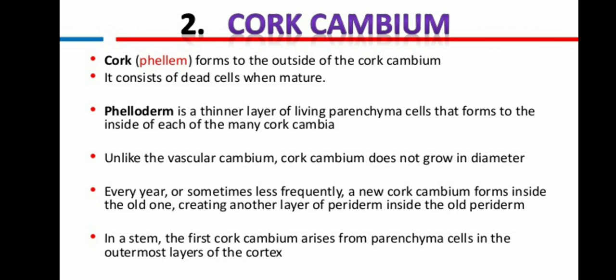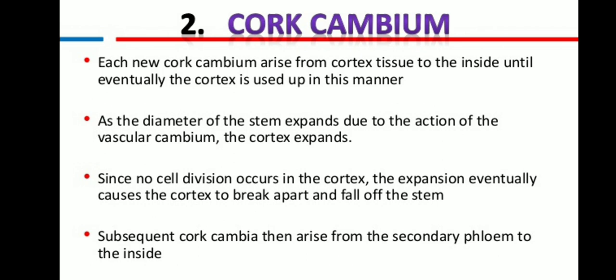The periderm consists of cork, phelloderm, and cork cambium cells. The cork, which is the phellem, forms to the outer side of the cork cambium and consists of dead cells when mature. The phelloderm is a thin layer of living parenchyma cells that forms on the inside of the cork cambium. Unlike the vascular cambium, the cork cambium does not grow in diameter. Every year, or sometimes less frequently, a new cork cambium forms inside the old one, creating another layer of periderm inside the old periderm. The first cork cambium arises from parenchyma cells in the outermost layer of the cortex, and each new cork cambium arises from the tissue beneath.